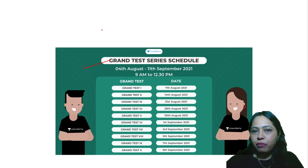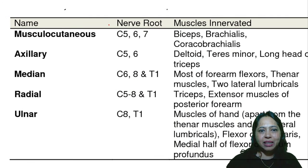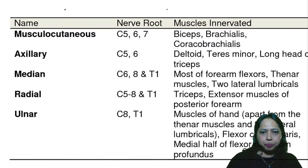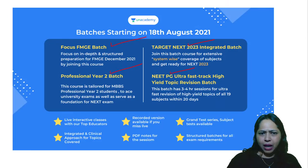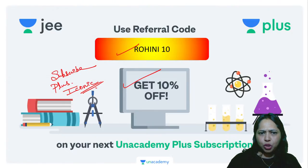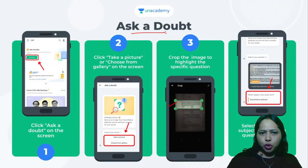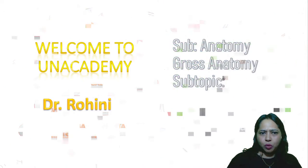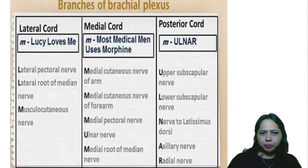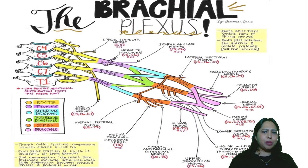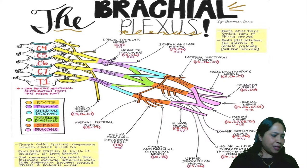Everything is neatly scheduled and planned. All you need to do is take the proper subscription, start studying, and work towards your goal — it is easy when someone motivates you. Okay, so this is the brachial plexus. Let's get started.